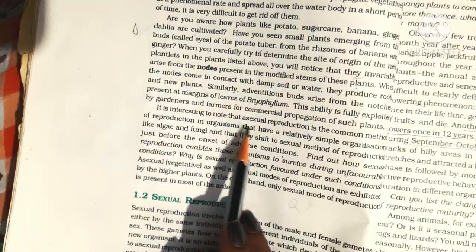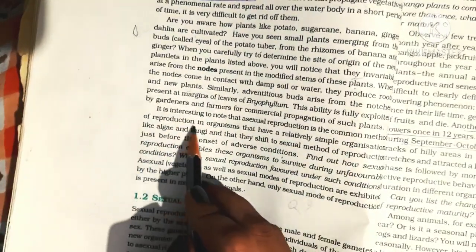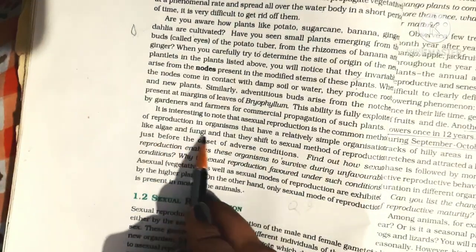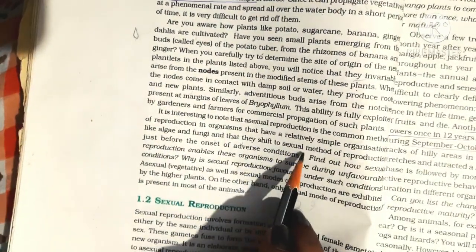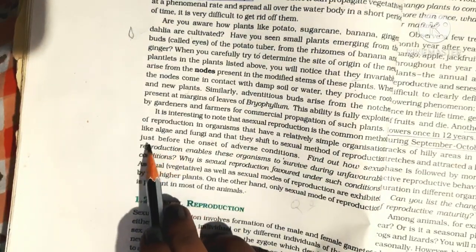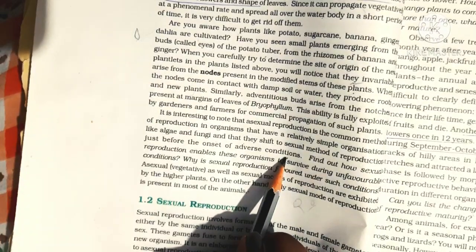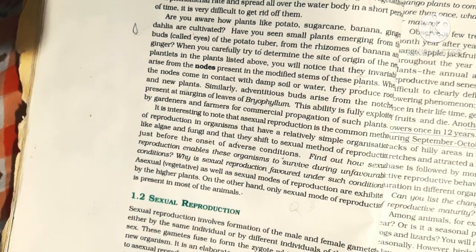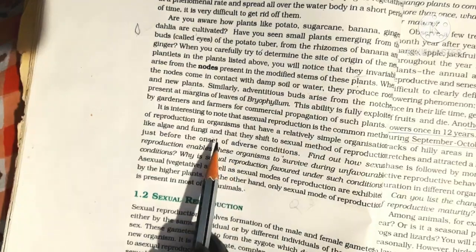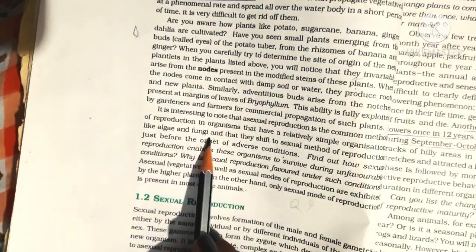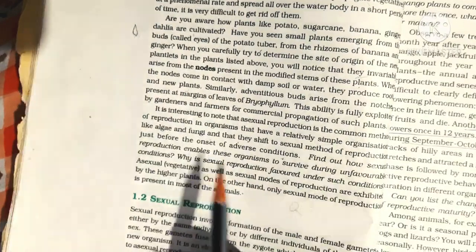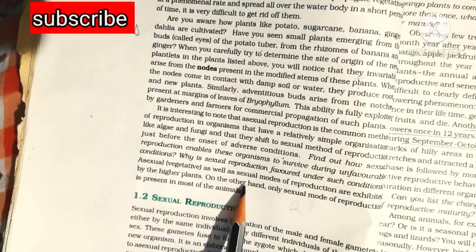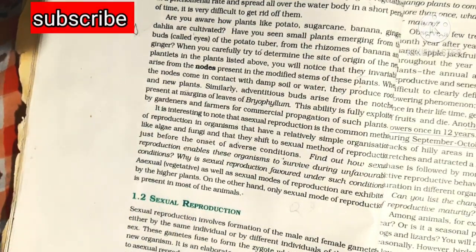It is interesting to note that asexual reproduction is the common method of reproduction in organisms with relatively simple organization, like algae and fungi, and that they shift to the sexual method of reproduction just before the onset of adverse conditions. On the other hand, only the sexual mode of reproduction is present in most animals.